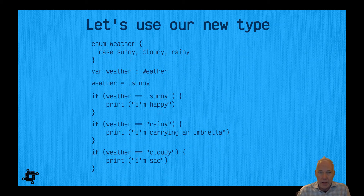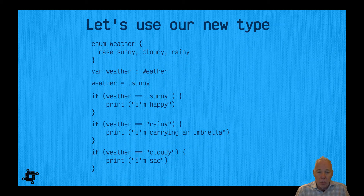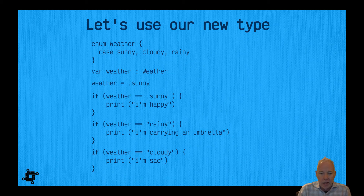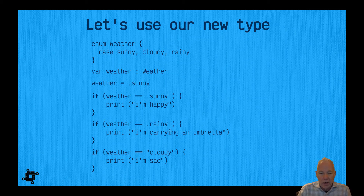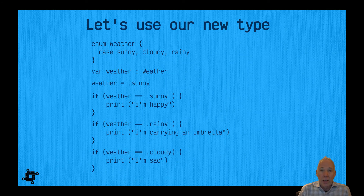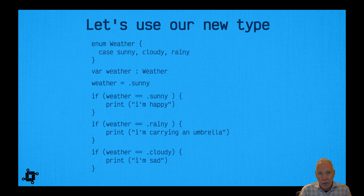Then we print I'm happy. Down in the other cases, we replace the string comparisons with dot rainy and dot cloudy respectively, just like we did for dot sunny. This is how we use an enumeration type, and it is much more reliable in our code.